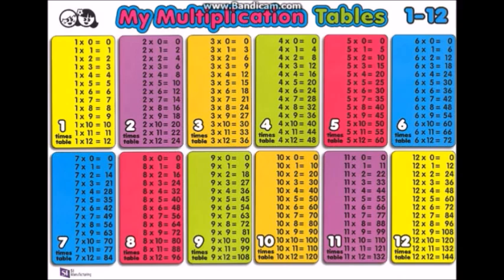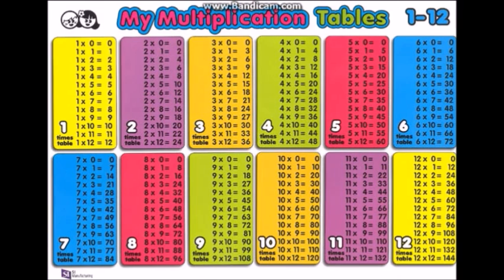5 x 0 is 0, 5 x 1 is 5, 5 x 2 is 10, 5 x 3 is 15, 5 x 4 is 20, 5 x 5 is 25, 5 x 6 is 30, 5 x 7 is 35, 5 x 8 is 40, 5 x 9 is 45, 5 x 10 is 50, 5 x 11 is 55, 5 x 12 is 60.